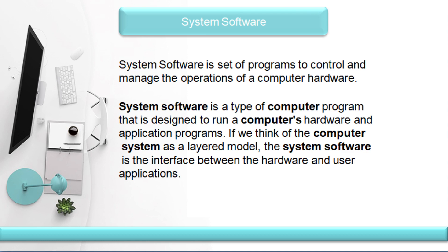The application opens through the system software program. For example, on a mobile device, we open an application and click on the next application step by step. We need to open WhatsApp — WhatsApp opens, we click on a contact, open a message, and when you click on the message it opens. If you want to use options, you can use the software. A computer program uses the system software.